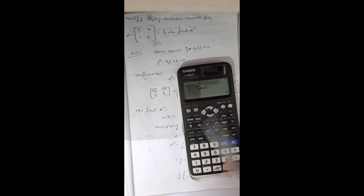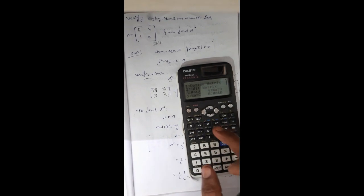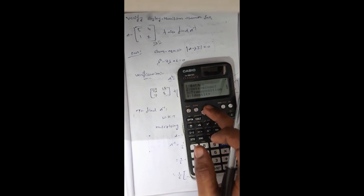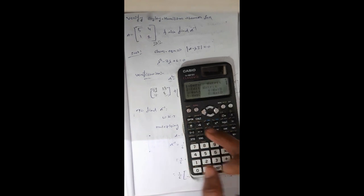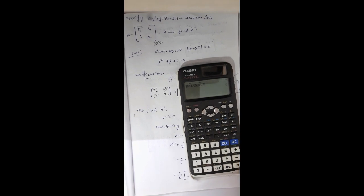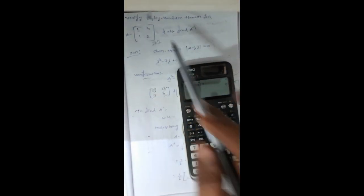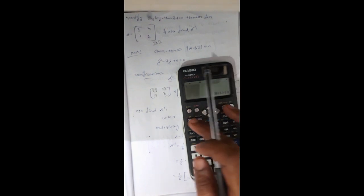To find the determinant on the FX 991 EX, press optn, go to matrix, scroll down — there are transpose, identity, and determinant options. Select determinant (the second option), then press optn and matrix A. The determinant of matrix A equals 6, which matches the manual calculation: ad minus bc equals 10 minus 4 equals 6.